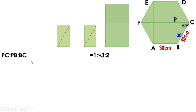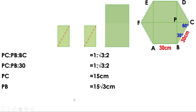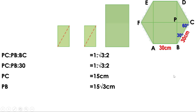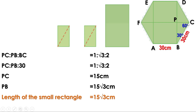That means PC:PB:BC = 1:√3:2. BC is 30. Replacing BC by 30, we get PC:PB:30 = 1:√3:2. Looking at the last term, 2 × 15 = 30, so multiplying each ratio term by 15: PC = 1 × 15 = 15 and PB = √3 × 15 = 15√3. PB is the length of the small rectangle, so the length of the small rectangle is 15√3 centimeters. PC is the breadth of the small rectangle, so the breadth of the small rectangle is 15 centimeters.